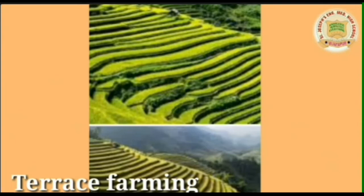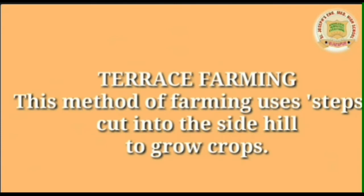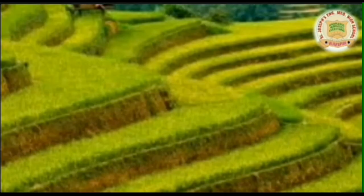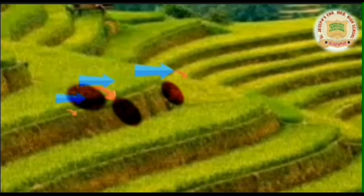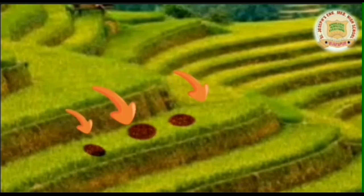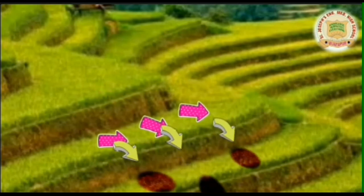Now, what is terrace farming? Terrace farming is a system used to grow tea in Assam, Ooty, Munnar, and other hilly regions in India. Terrace farming uses steps cut into the side of a hill to grow crops. When it rains, the rich soil does not get washed away with the flow of water but is carried down to the next level.